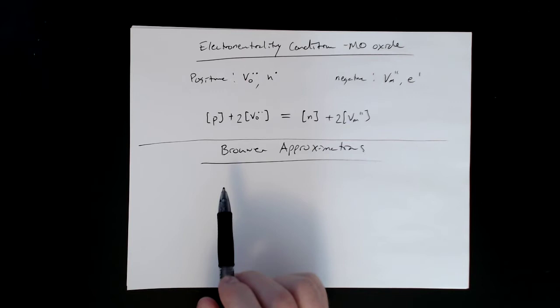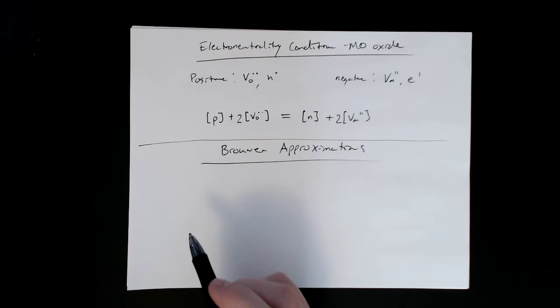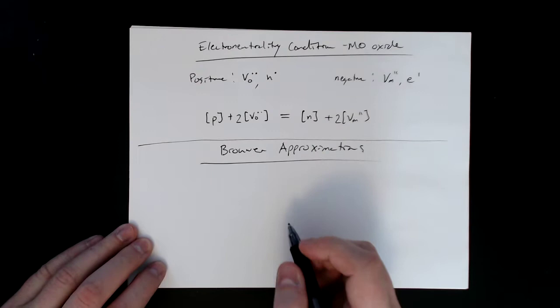These are pretty good approximations when we have a strong dependence of the defect concentrations on temperature. They tend to be orders of magnitude, and so these tend to be good. So let's go through and just write out all the possible Brouwer approximations for our MO system.